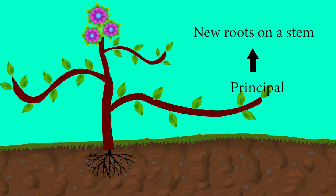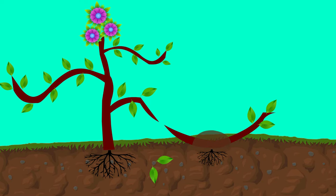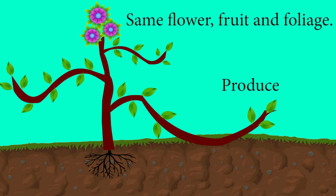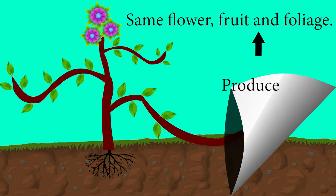The rooted stem is then removed to become a new plant growing on its own root system. Layering is an asexual propagation process, so all plants produced by layering have the same flower, fruit and foliage, physical appearance of the parent plant.